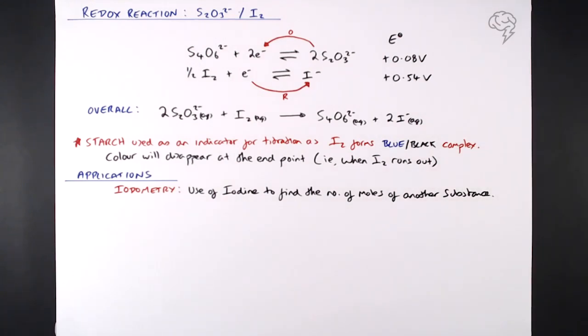Copper 2 plus will react with iodide to form iodine. Now, once you know how much, once you've formed your iodine, you can use this equation, this redox reaction at the top, to find out how much iodine you've got in that solution. If you know how much iodine you've got, then you can work backwards and find out how much copper you've got. So there's two reactions, two redox reactions going on here. One, a metal reacting with iodide to form iodine. And then this reaction to find out how many moles of iodine we've got. So we can work backwards and find out how many moles of metal we've got.